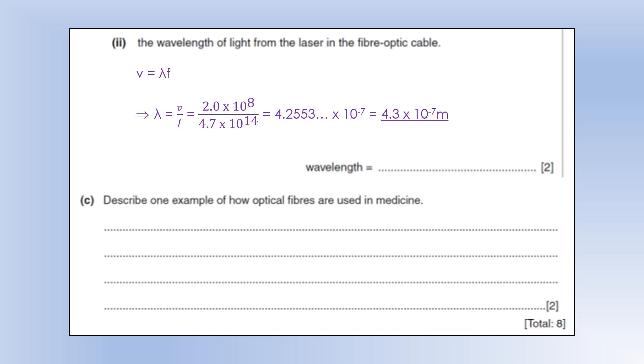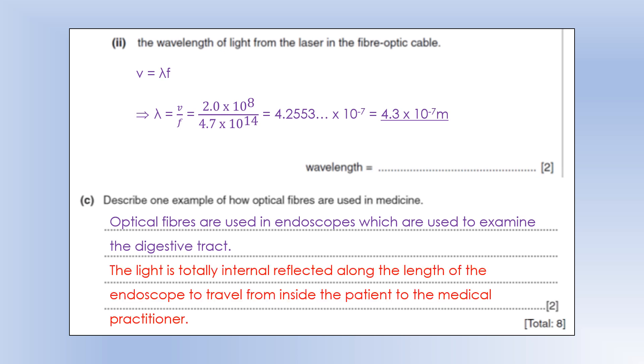Describe one example of how optical fibers are used in medicine. So they're used in a device called an endoscope which you use to examine the digestive tract, so you either stick them down somebody's throat to look in their stomach, or you stick them somewhere more unpleasant to have a look at their intestines and stuff. And they work by light being totally internally reflected along the length of the endoscope to travel from inside the patient to the person looking at it. That's why they're involved in the optics topic.